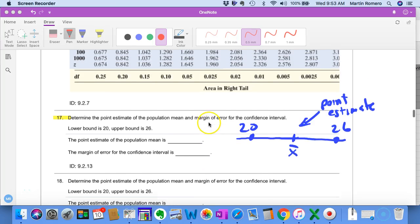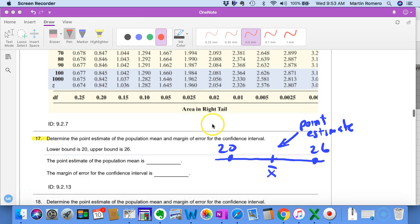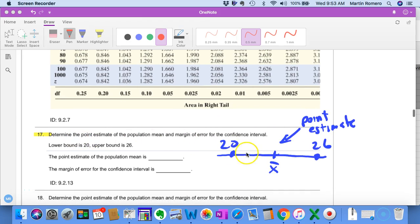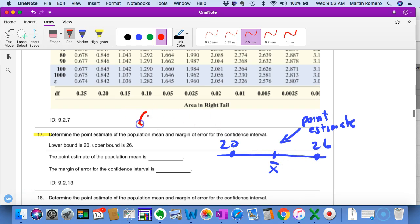Let's take a look at problem 9.2.13. Here you're given a lower bound of 20 and an upper bound of 26. So we're given the confidence interval is from 20 to 26. We have some level of confidence that some value is between 20 and 26, but it's between 20 and 26.